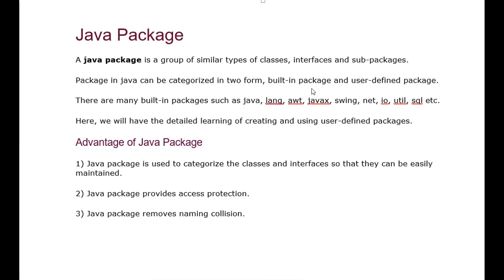A built-in package is the one that we get with the Java compiler first — the Java Development Kit. Examples include java.lang, AWT, JavaX, Swing, NET, IO, UTIL, SQL, and many more. We get many packages here containing many classes, methods, and types.